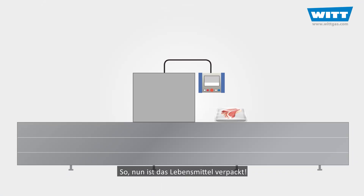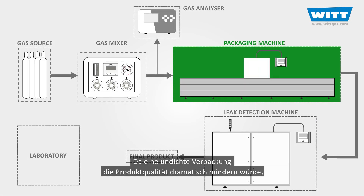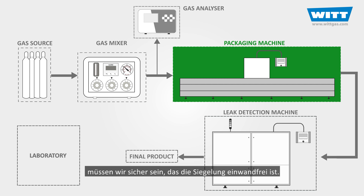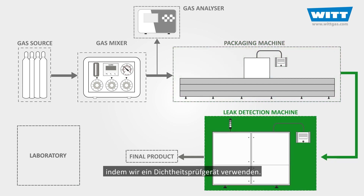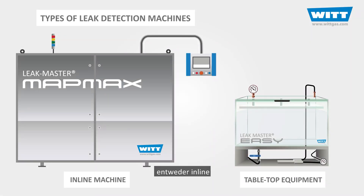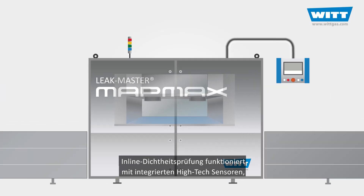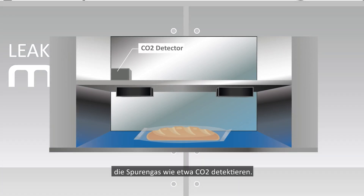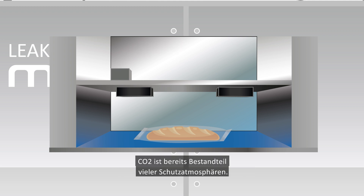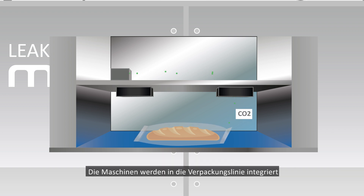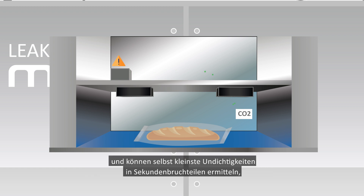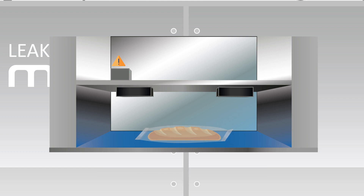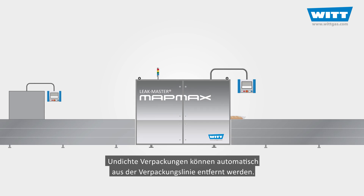Finally, we have our food packed. But as our product quality will be dramatically affected by leakages, we have to be sure it is sealed properly. So the next stage is to make sure the product package is free from any leakages, using a leak detection machine. In-line leak detection machines work with integrated high-technology sensors which detect trace gases like carbon dioxide. CO2 is already part of the modified atmosphere — it delivers the best results in terms of relevant leak size, and it's not expensive. They can detect even the smallest leaks in a fraction of a second when the trace gas escapes from the packages, and can also automatically remove faulty packs from the production line.